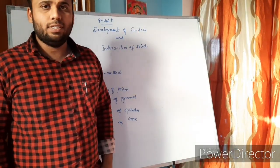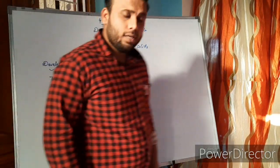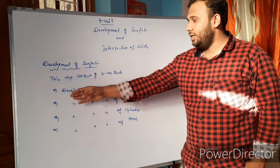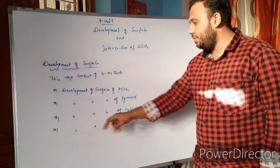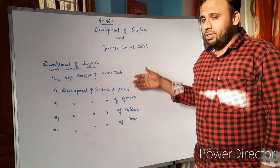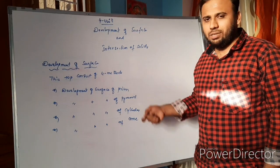First, coming to development of surfaces. Development of surface consists of four different topics: development of surface of prism, pyramid, cylinder, and cone. These four different methods have four different problems which I am going to explain in a step-by-step process.